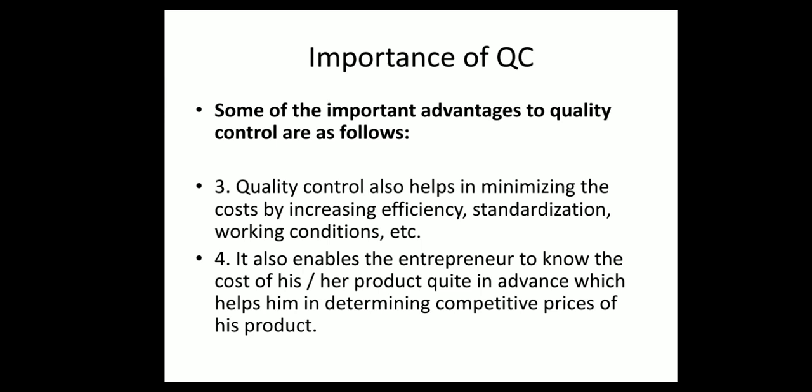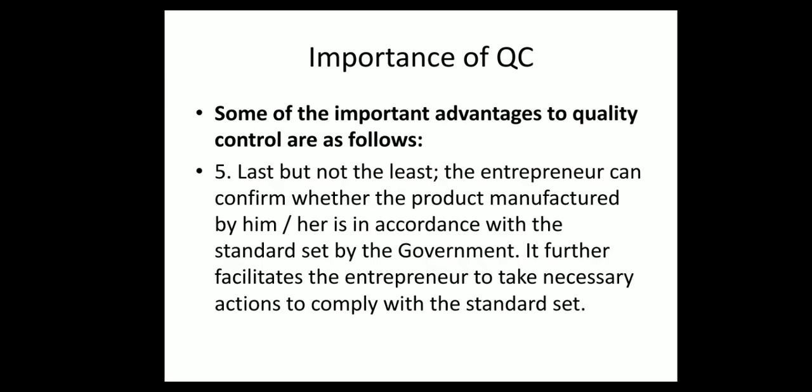Third, quality control helps in minimizing cost by increasing efficiency, standardization, and working conditions. Efficiency is increased because of quality control, standardization is achieved, and working conditions are improved. Fourth, it enables the entrepreneur to know the cost of their product in advance, which helps in determining competitive prices. Fifth, the entrepreneur can confirm whether the product manufactured is in accordance with government standards, and take necessary actions to comply.